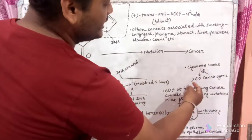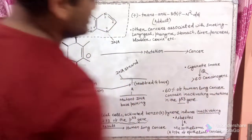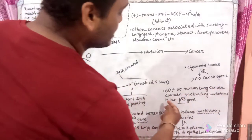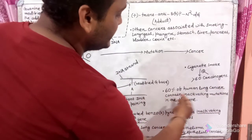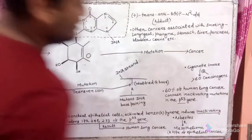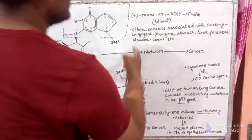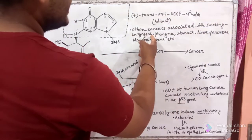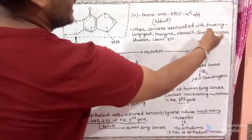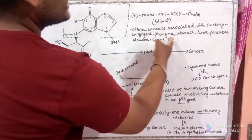Cigarette smoke contains more than 60 carcinogens. 60% of human lung cancers contain inactivating mutations in the P53 gene. Other cancers associated with smoking are laryngeal, pharynx, stomach, liver, pancreas, bladder, cervix, etc.